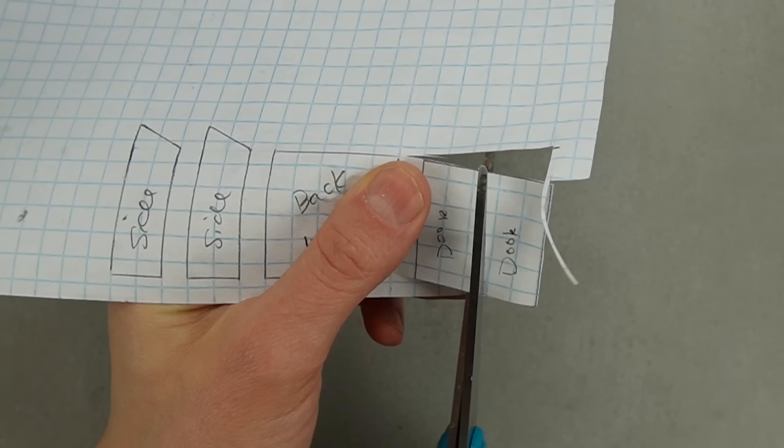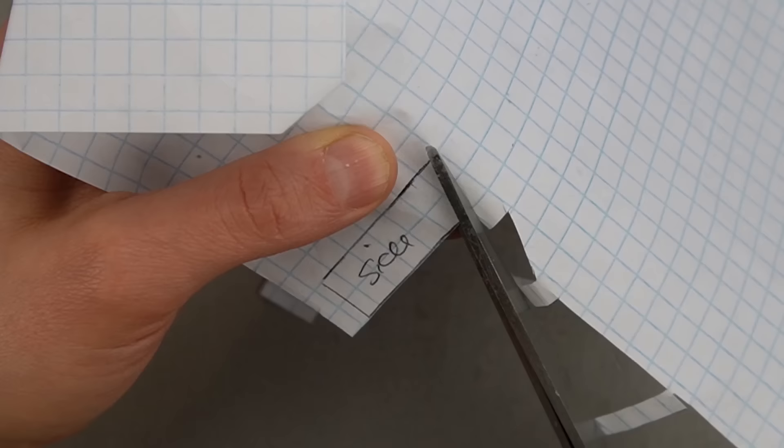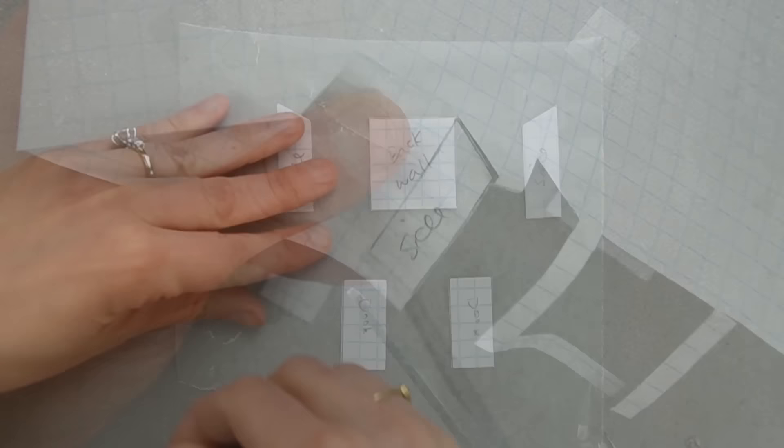I cut out five pieces in total and covered them with wax paper so I can assemble the pieces directly on top of the pattern.